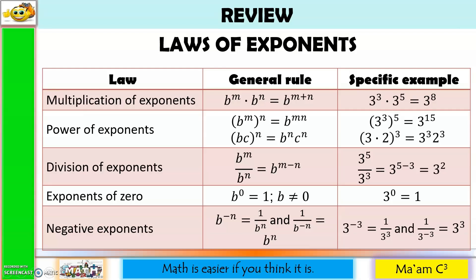Let us also review laws of exponents. For multiplication of exponents, we simply copy the base. So in this case, the base is 3, so we copy 3, and then we add the exponents. 3 plus 5 is equal to 8, so we have 3 to the 8th power.